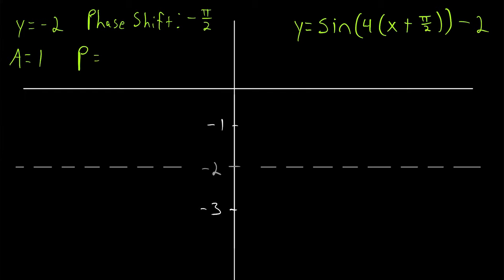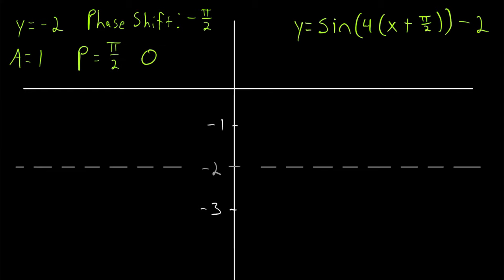The period is 2 pi divided by 4, which is pi over 2. And then the quarter period q is just the period pi over 2 divided by 4, which is pi over 8. Finding the period is straightforward — it's just 2 pi divided by the number being multiplied by x.